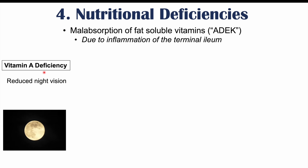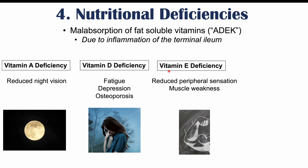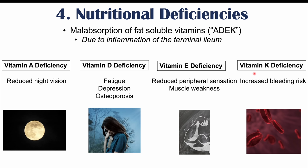Each fat-soluble vitamin can become deficient in Crohn's disease. Vitamin A deficiency leads to reduced night vision. Vitamin D deficiency can cause vague symptoms like fatigue, as well as depression and osteoporosis later in life. Vitamin E deficiency can cause reduced peripheral sensation or muscle weakness. Vitamin K deficiency leads to increased bleeding risk, since vitamin K is responsible for coagulation factors.